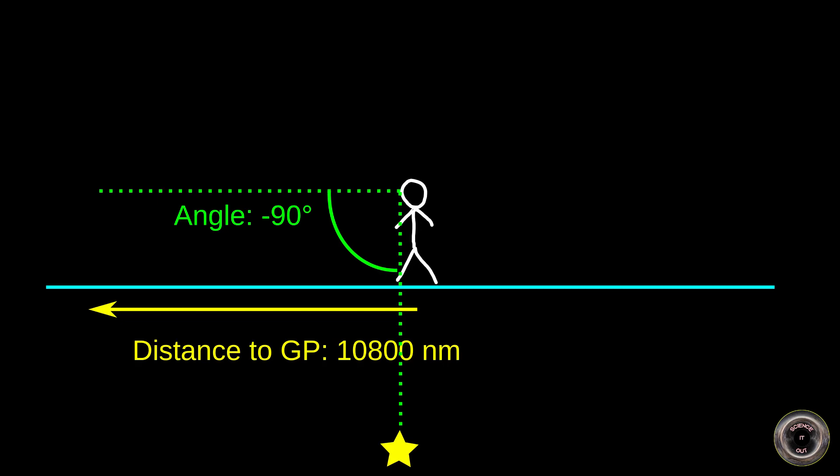But let's continue moving even further away. 12,000 nautical miles away from the GP, the calculated elevation angle will be minus 110 degrees. It sounds a bit absurd, because how can it be below minus 90 degrees? But this just means that we need to look 110 degrees below the direction in front of us, which is the same as 70 degrees below the direction to the back. So the elevation angle is really minus 70 degrees, but to the back instead of to the front.